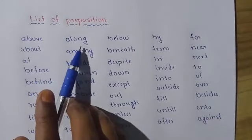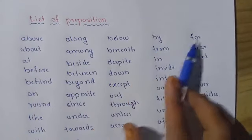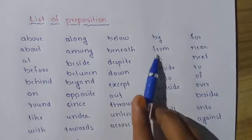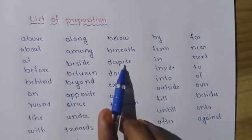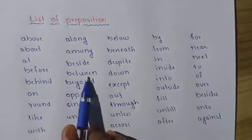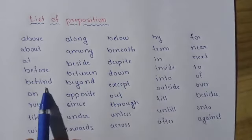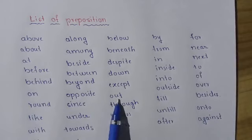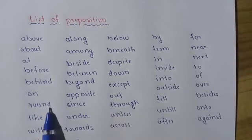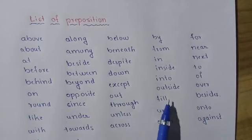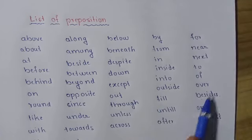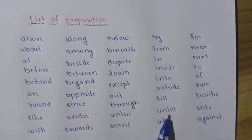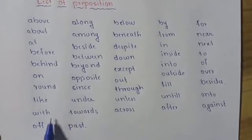Let us continue with the list of prepositions: above, along, below, by, for, about, among, beneath, from, near, at, beside, despite, in, next, before, between, down, inside, to, behind, beyond, except, into, off, on, opposite, out, outside, over, round, since, through, till, besides, onto, against, until, after, unless, across, under, towards, past, like, with, of. These all are the list of prepositions.